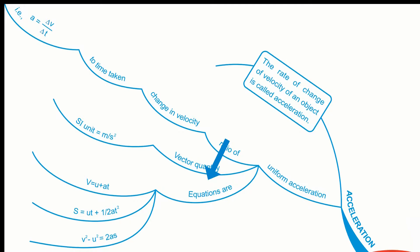The equations used for uniform acceleration are: v = u + at, s = ut + ½at², and v² - u² = 2as.